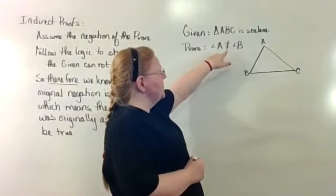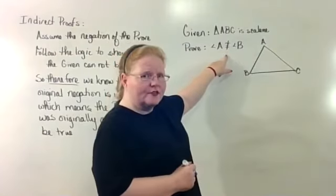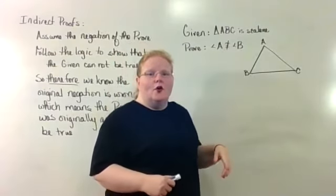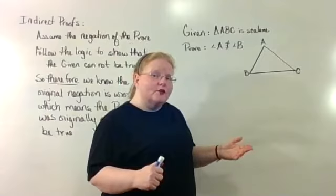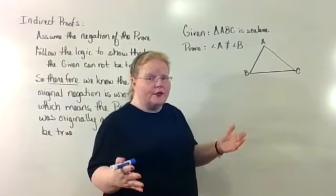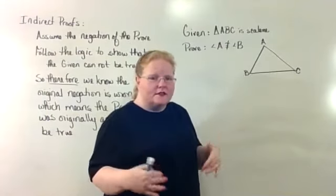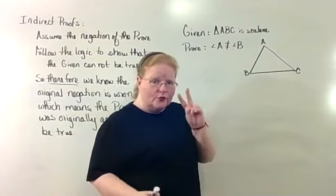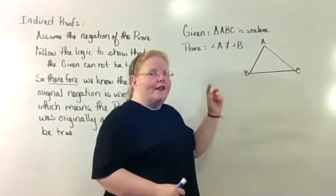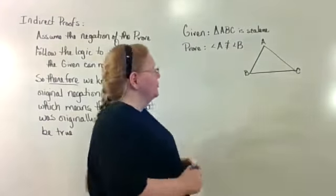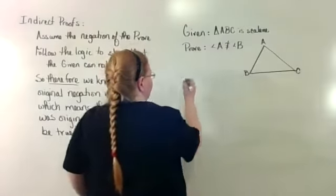Because there is a definite negation of this, there isn't something that's like, oh, they may or may not be congruent, or you can be congruent and not congruent at the same time. Since none of that stuff exists, it either is or it isn't. Two possibilities. That's when you can use an indirect proof. So we're going to start by saying, let's assume angle A is congruent to angle B.